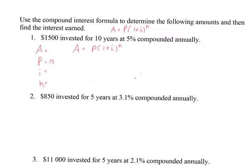Our starting value P is $1,500. I is 5%, which is 5 divided by 100. And N is 10 years. Substituting directly in, we have A equals 1500 times (1 plus 5 divided by 100) raised to the power of 10, which gives us $2,443.34.